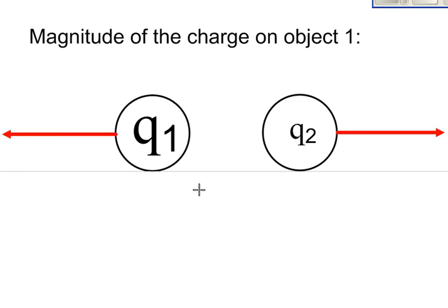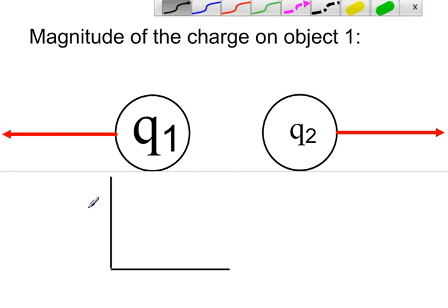If we were to graph this relationship, it would look a little something like this. There's our axes. We'll put charge.